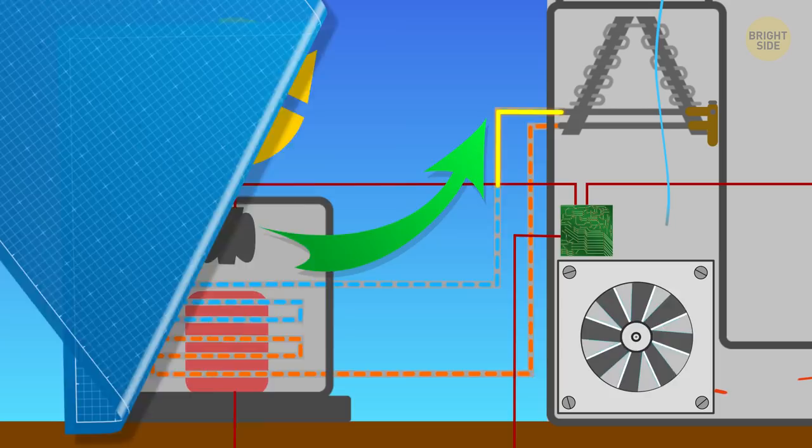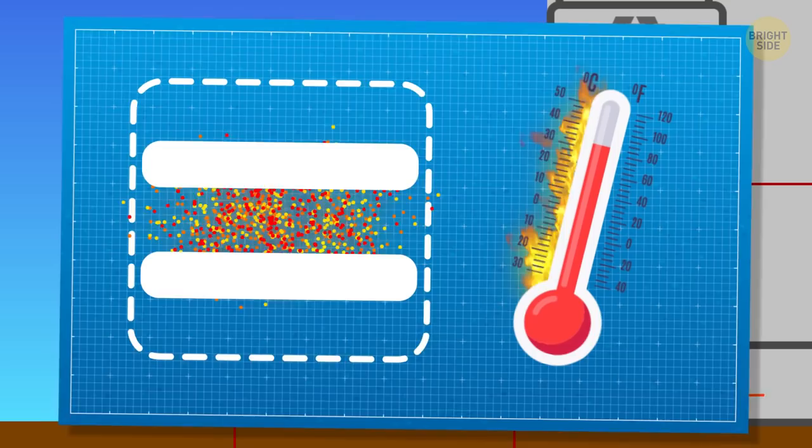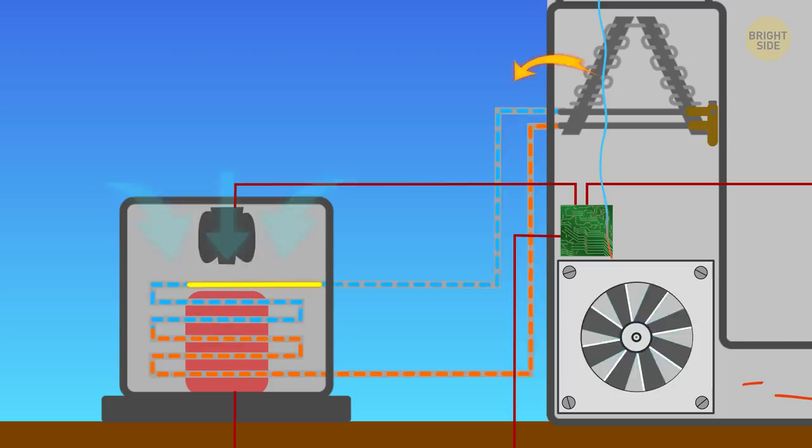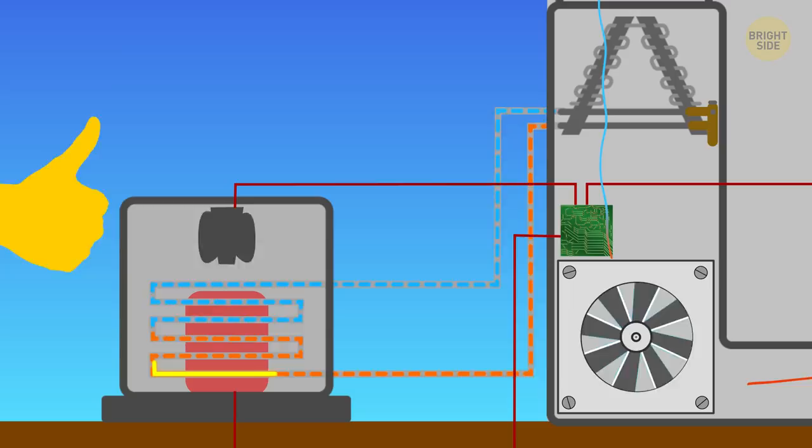It's important to squeeze the gas tightly because the higher the pressure, the higher the temperature. It has to be done to make the refrigerant hotter than the air outside. Heat naturally moves from hotter to colder bodies. The outside air gets in the condenser coil through the fan. The hot air from your house disperses into street air.